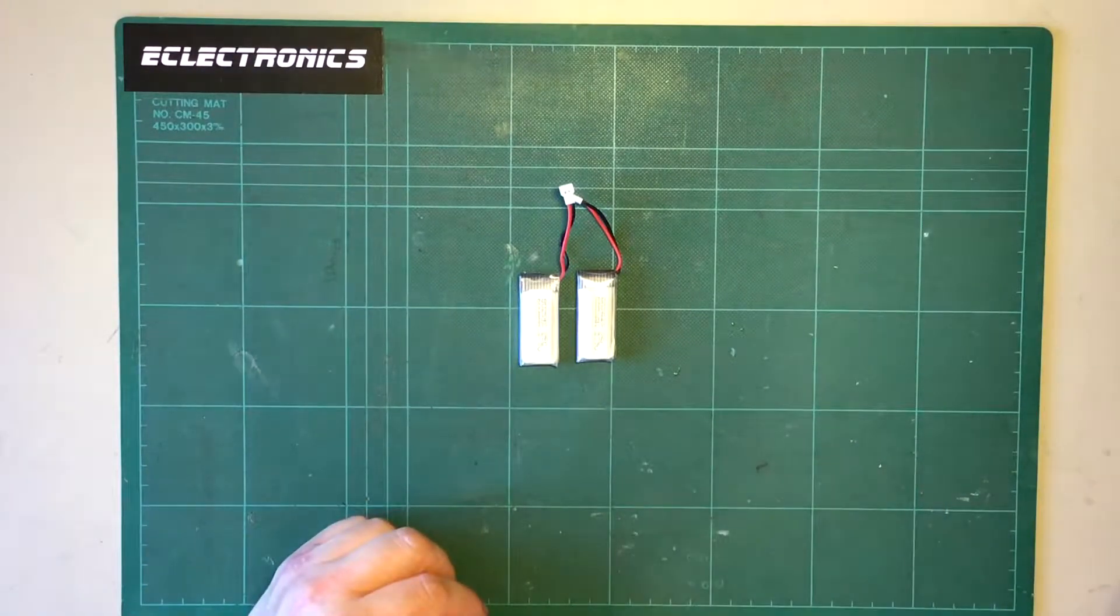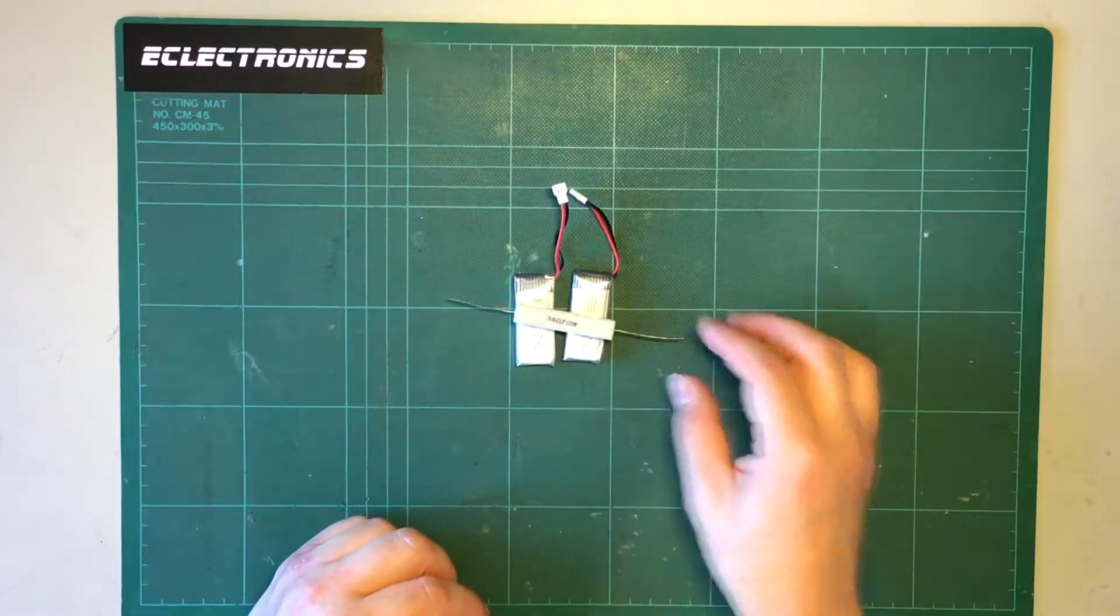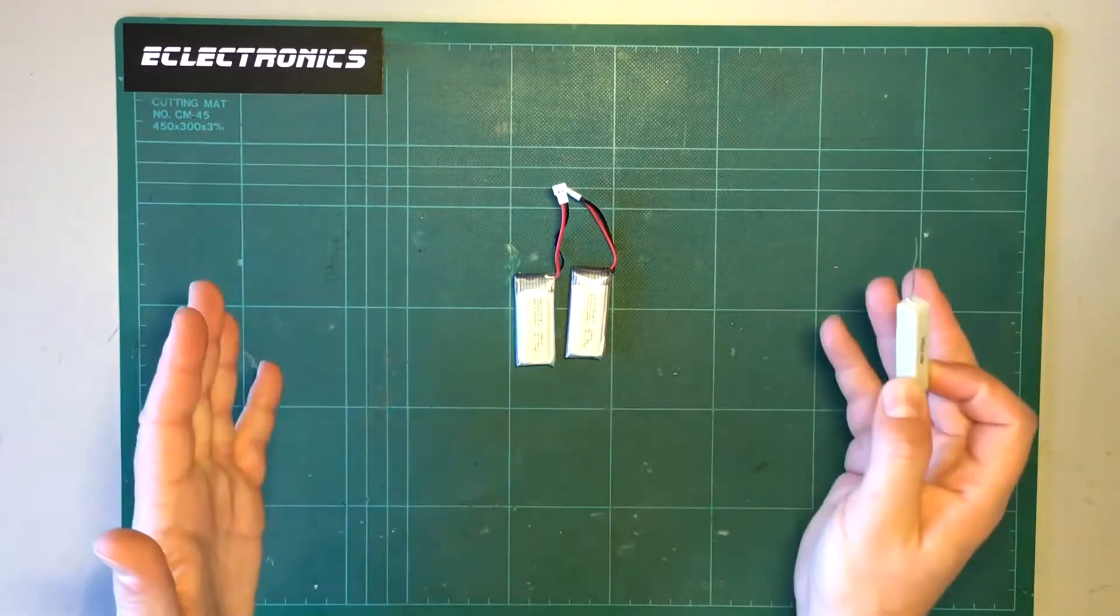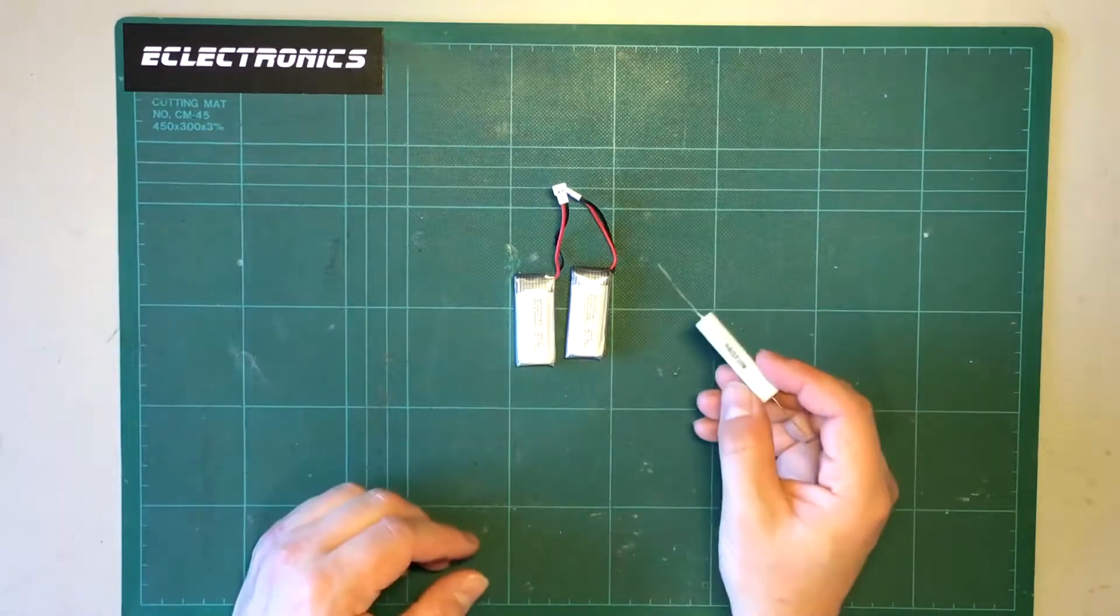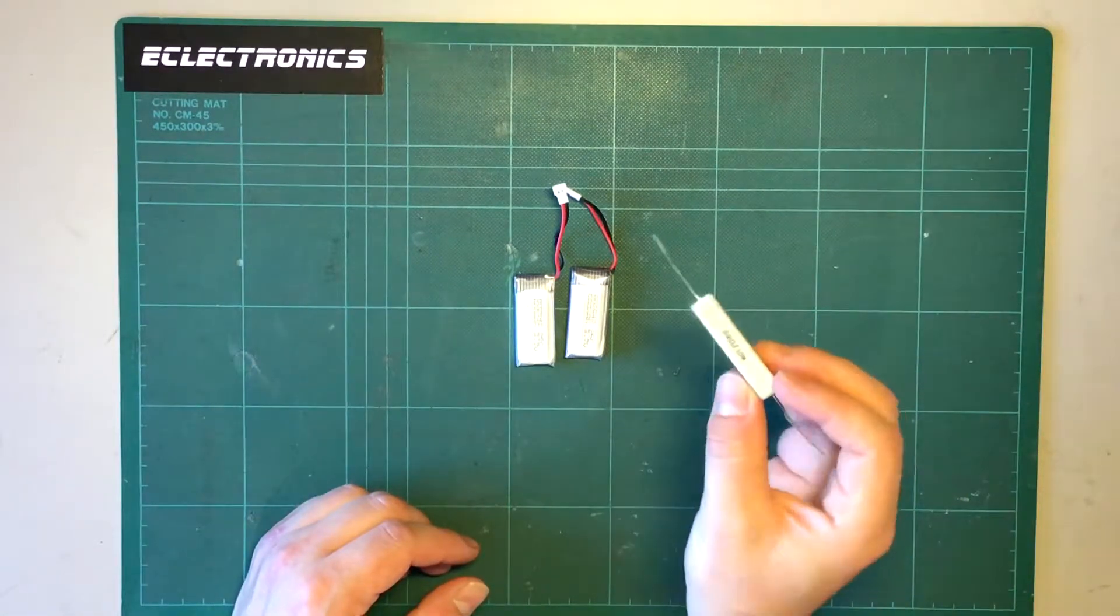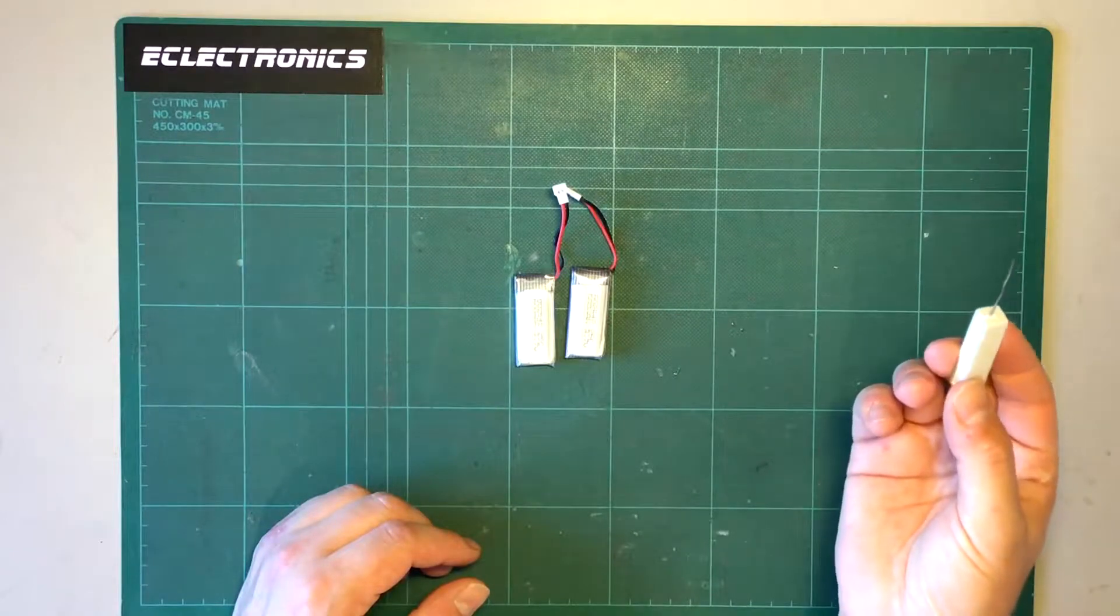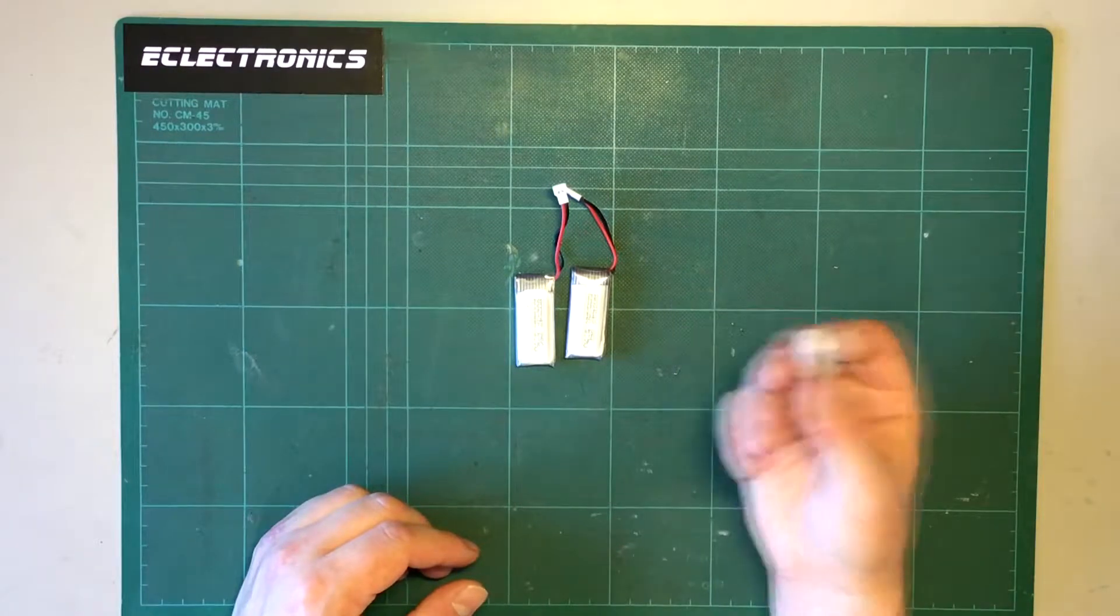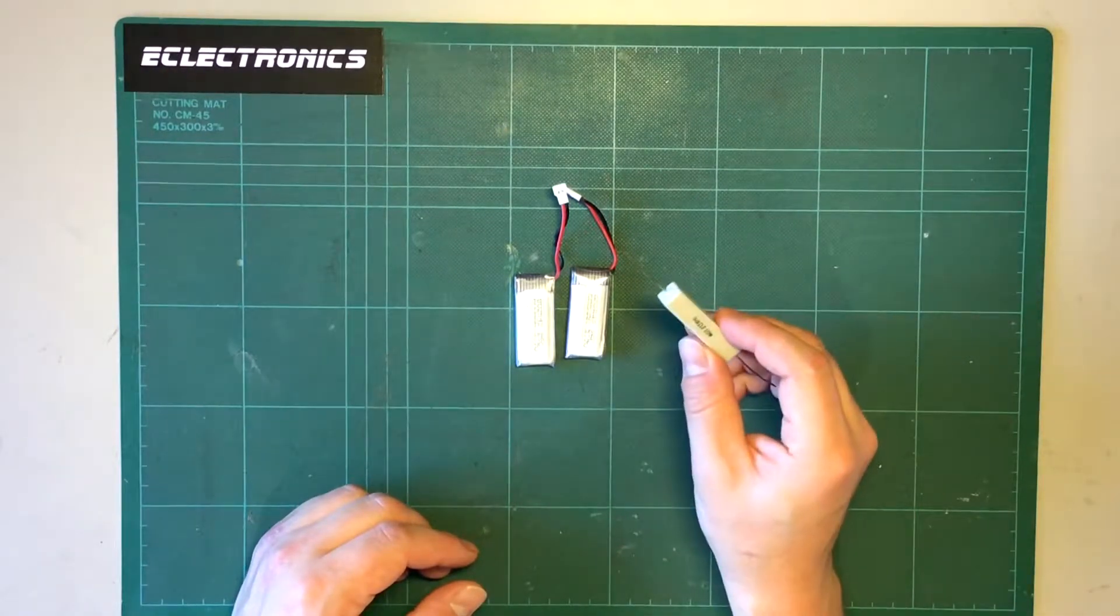Well a traditional way is with one of these, or a board with some of these on it. As the cells charge up, if one of them gets too high in voltage, connect a resistive load across the cell that's too high, throw away some of the energy, and balance the pack up. That's not great is it? Throwing away energy seems a bit of a waste.